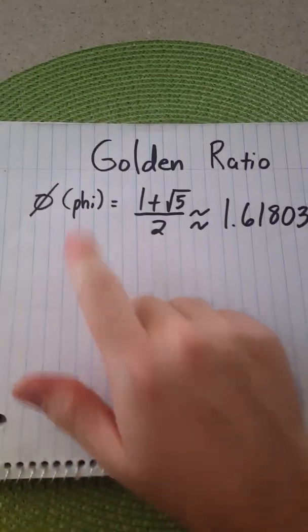First, a little background. The golden ratio. What is the golden ratio? Well, I'll show you. It's usually given by the Greek letter phi.